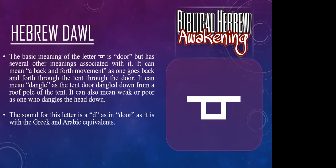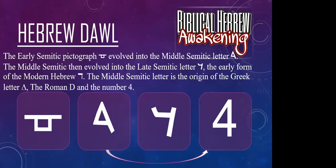The translations get messed up because translators look at things from a Eurocentric Western mindset and take things literally, not looking at the function of what's being talked about. The sound for the letter Dallet is D as in 'door.' The early Semitic pictograph evolved through middle Semitic into late Semitic, and the middle Semitic form is where we get our number four.